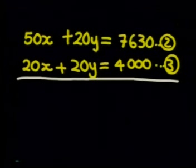Remember, we need to change the signs. So this becomes minus 20X. 50 minus 20X gives me 30X.